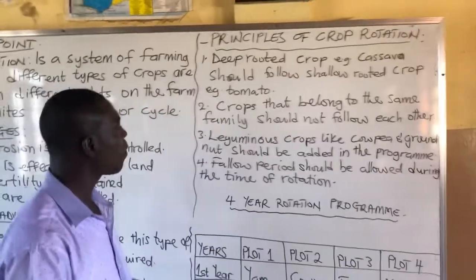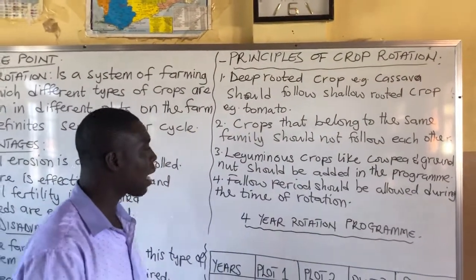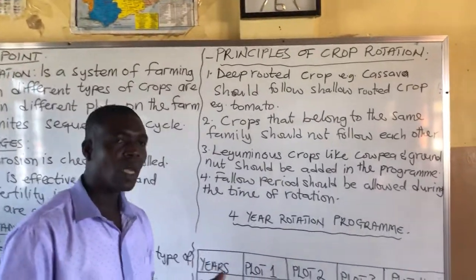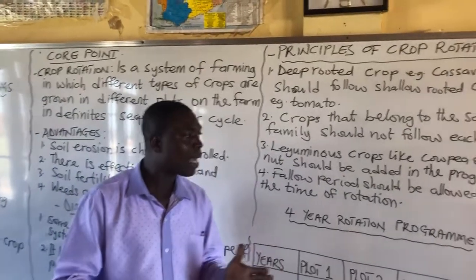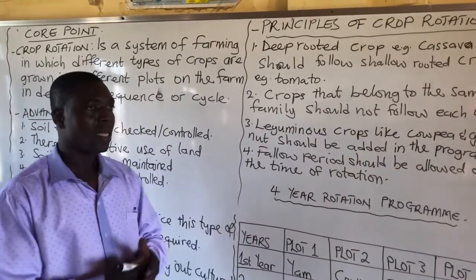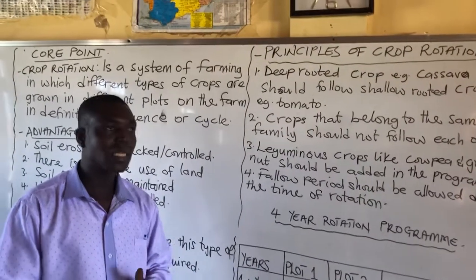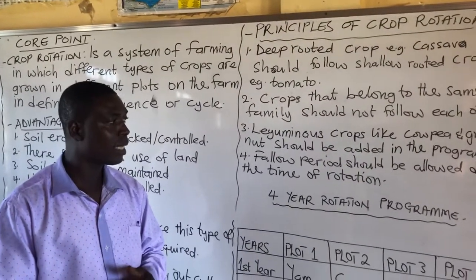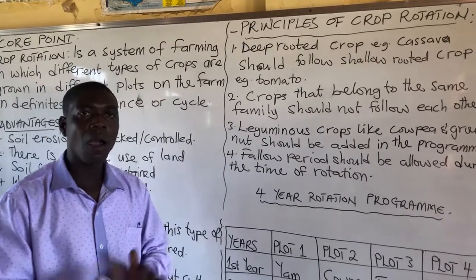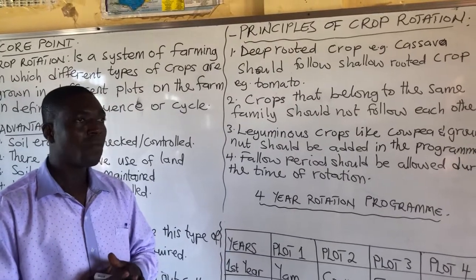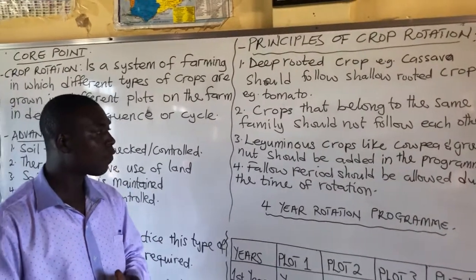The fourth principle is that a fallow period should be allowed during the time of rotation. What is a fallow period? A fallow period is a period or time allowed by a farmer for the land to regain its soil fertility or nutrients. It is simply a period that the farmer leaves the land uncultivated so that the land can regain its soil nutrients. That is the fallow period.